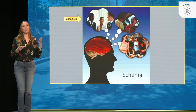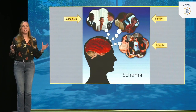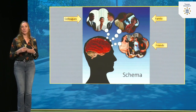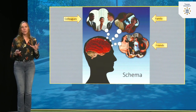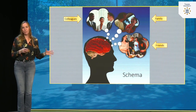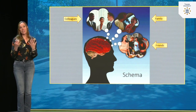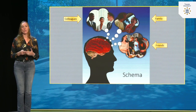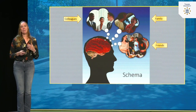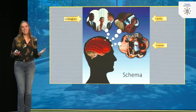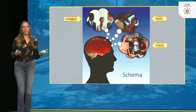Schemas are mental structures that organize knowledge about a specific topic — for example, all the information we have about our colleagues, our family, our friends, but also about completely different topics like hurricanes, your favorite soda, or your favorite breakfast. All these different topics have a specific structure in our brain, and there are so many different parts of information that we know a lot about.